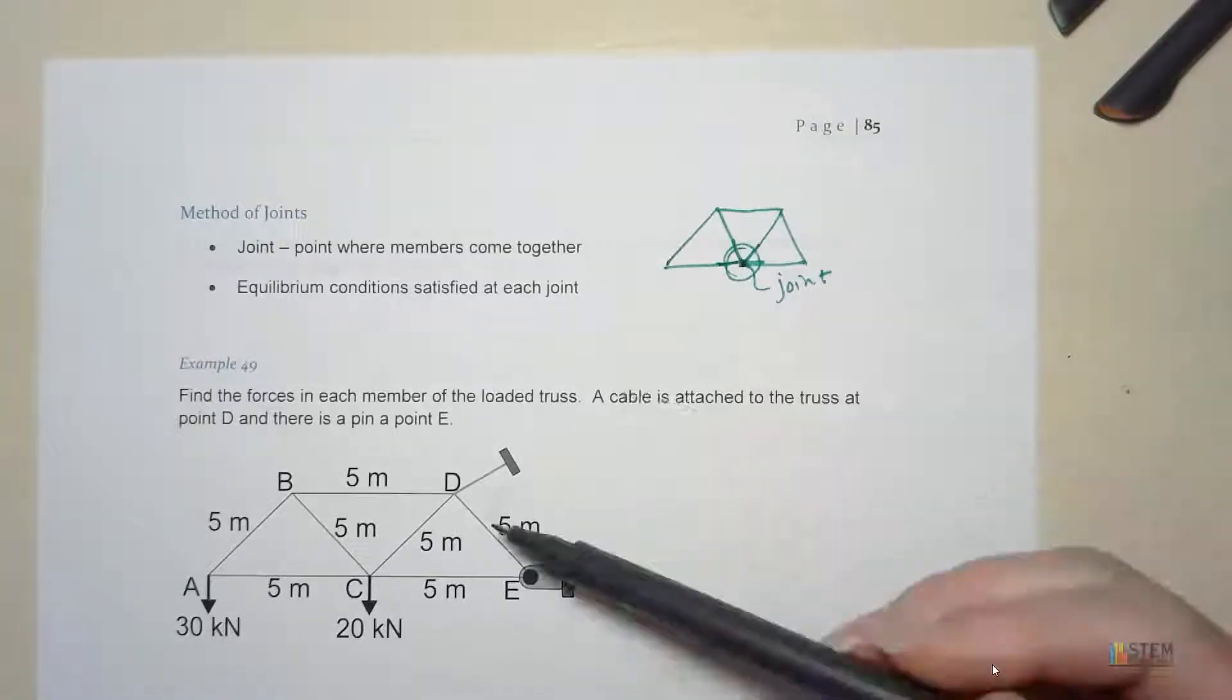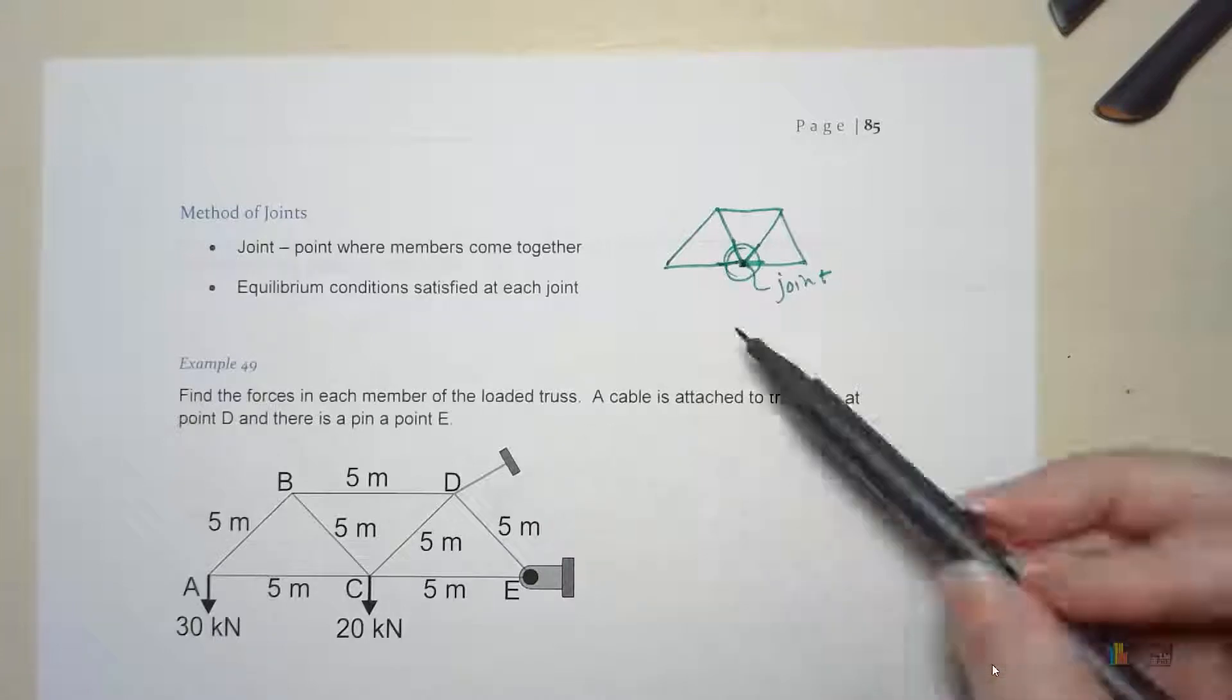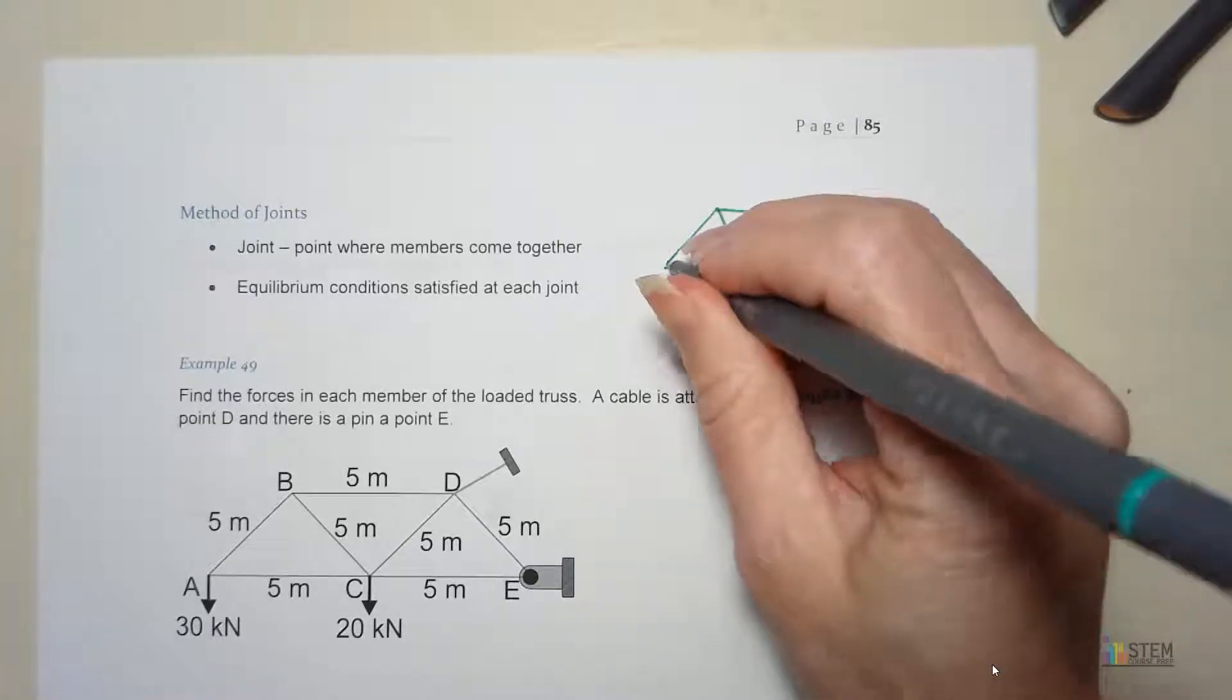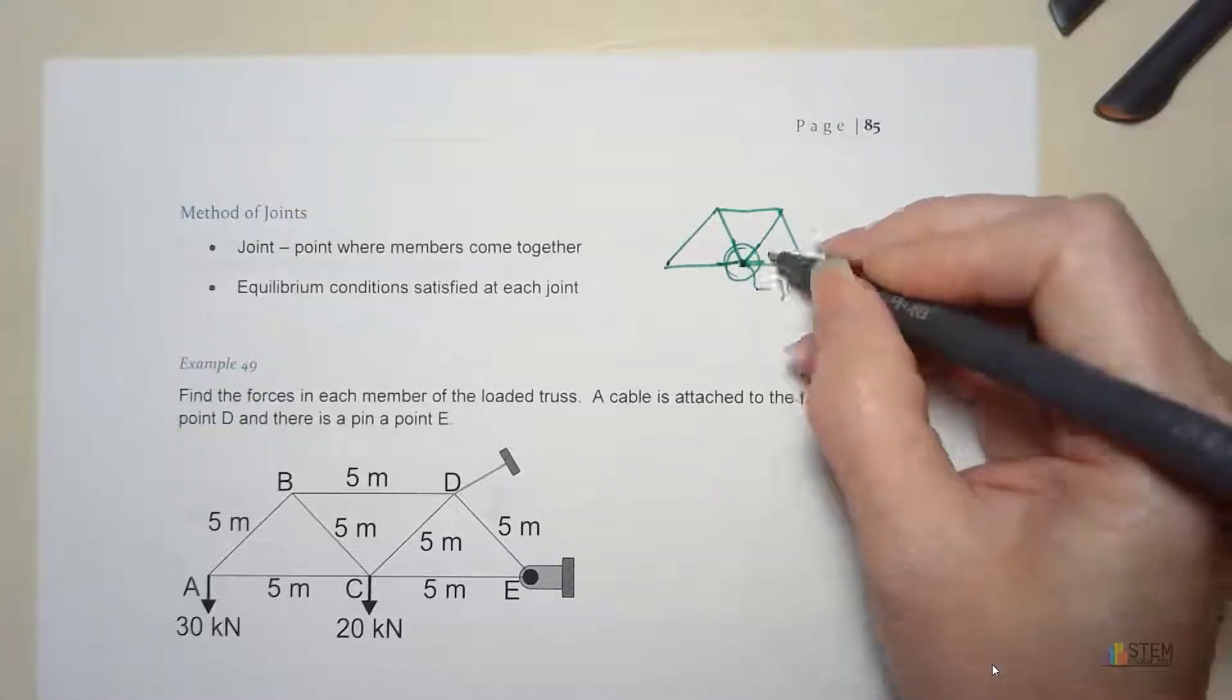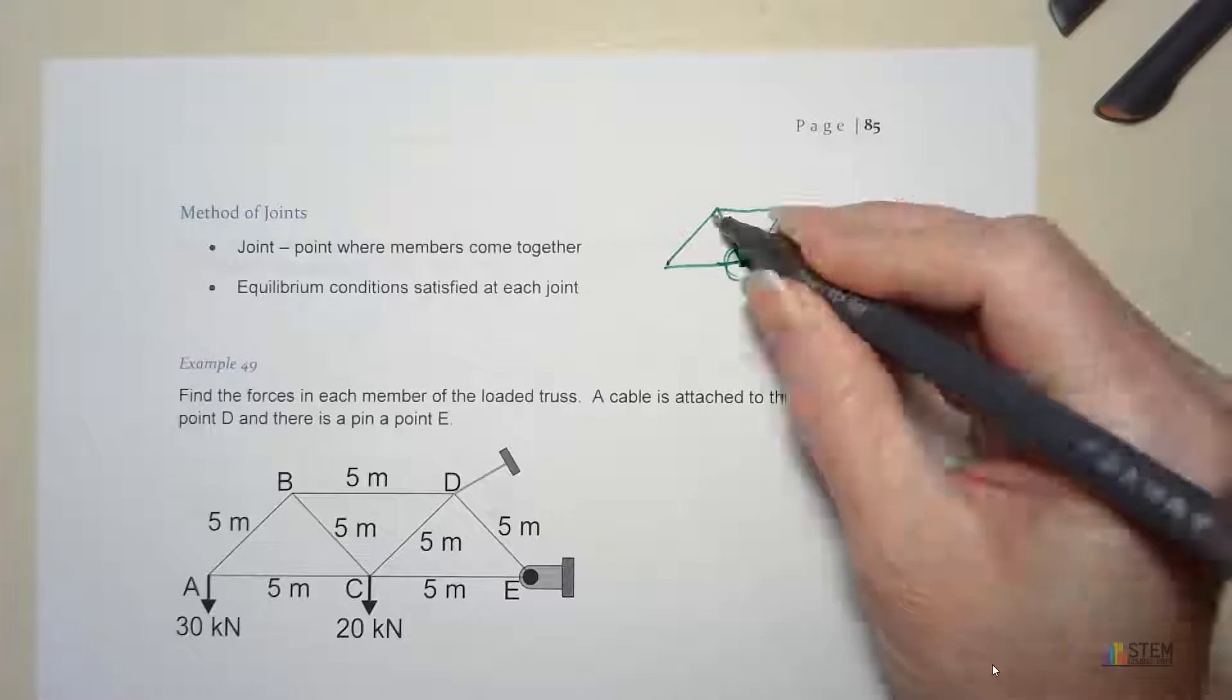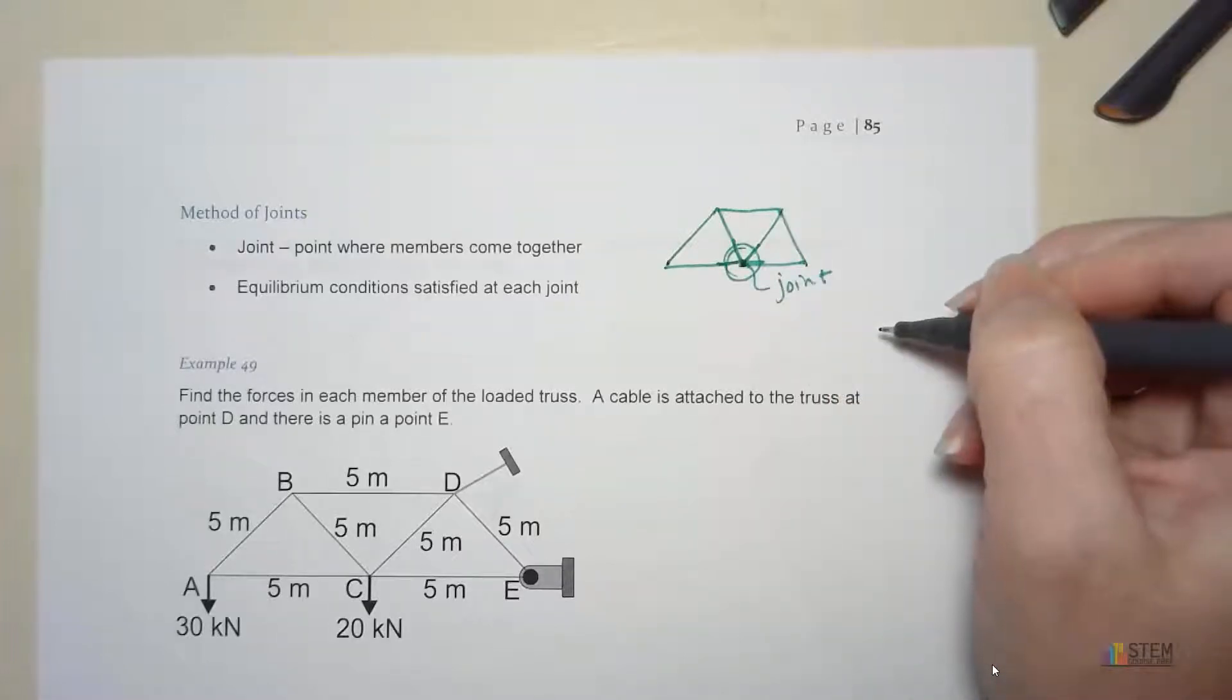Now in order for the whole truss to be in equilibrium, equilibrium has to be satisfied at each of the joints. So it's called the method of joints because we're going to analyze all of the joints of the truss. And you'll see when we get to the example.